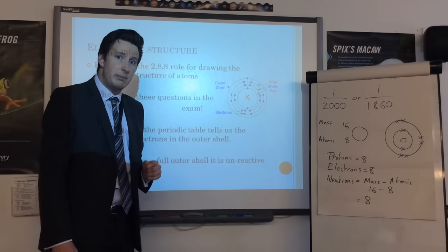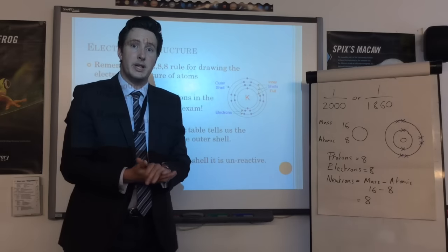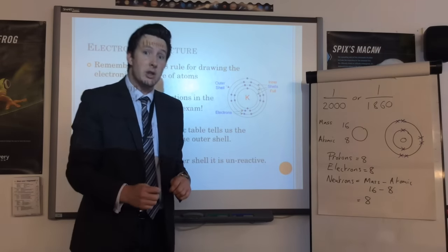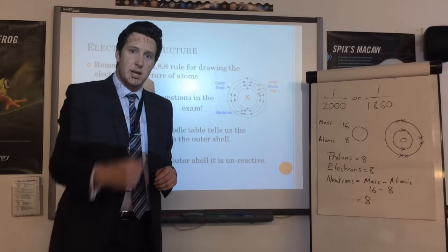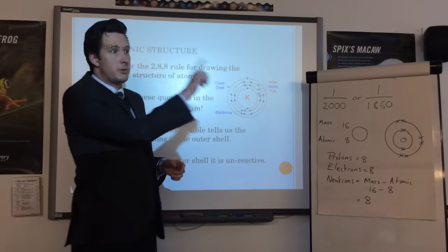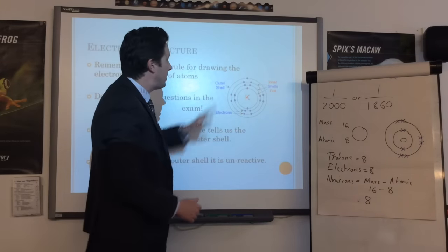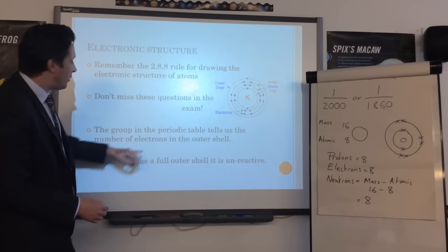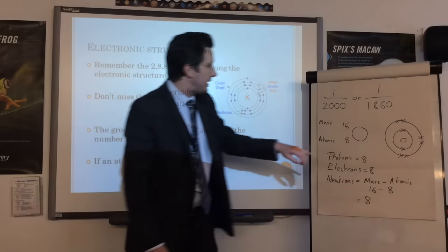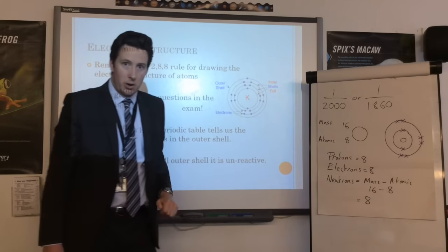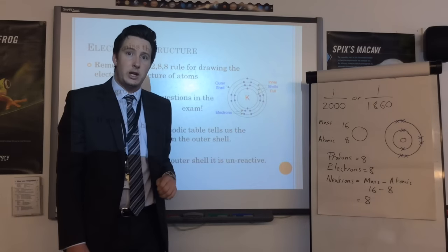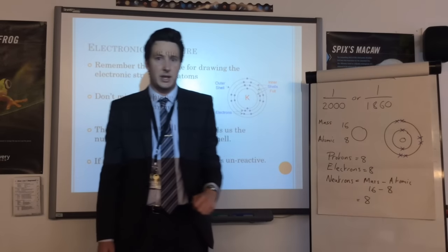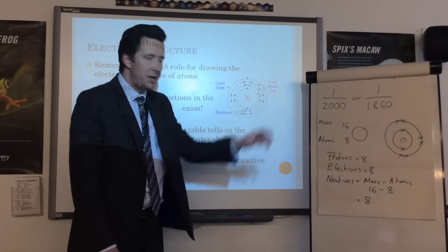Things we can learn from electronic structure: the groups in the periodic table. Groups are the columns, and your exam periodic table will actually be labeled with numbers above each group. Groups one and two are on the left, then there's a big block in the middle, then groups three through seven and zero. The group number tells you the number of electrons in the outer shell. Potassium has one electron in its outer shell, so it's in group one. Oxygen has six electrons in its outer shell, so it's in group six.